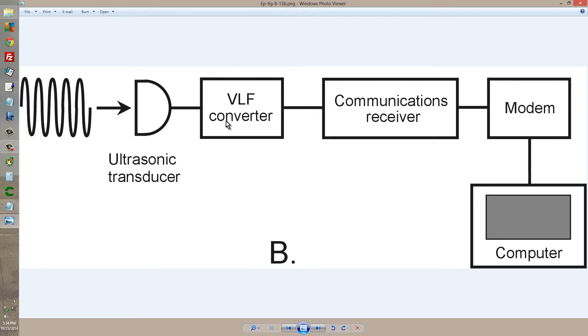Then you have a very low frequency converter for your communications receiver so that you can tune these signals in on, say, one of the ham radio bands, and then connect your terminal unit or modem to your computer and receive it just like it was a ham radio signal.